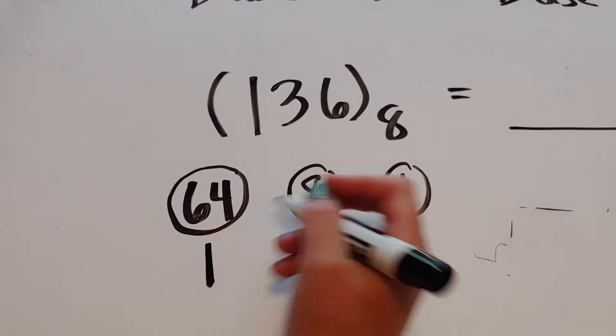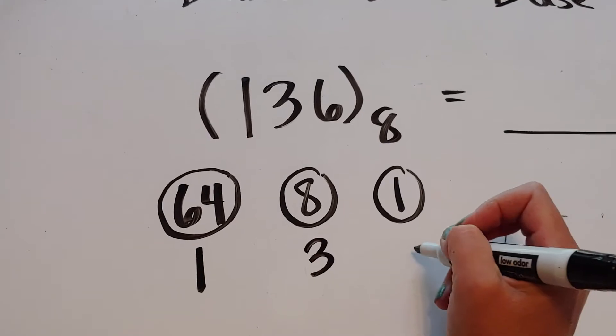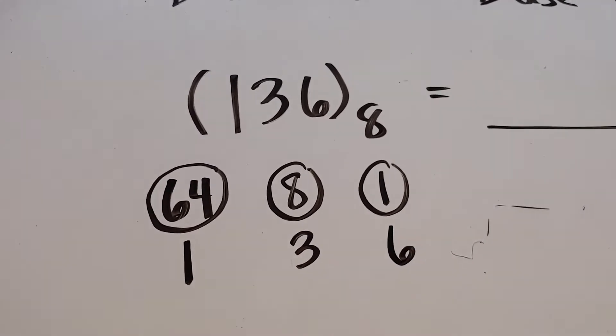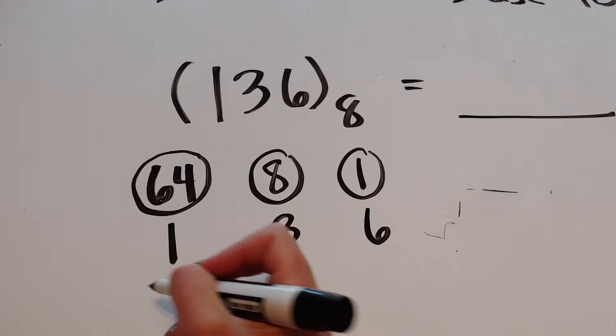So what this is saying is I have 1 64-cent coin, 3 8-cent coins, and 6 1-cent coins. All right, so let's figure out how much I've got.